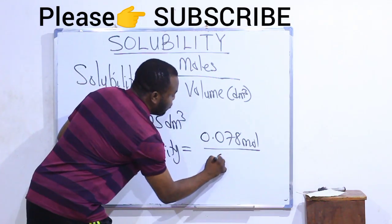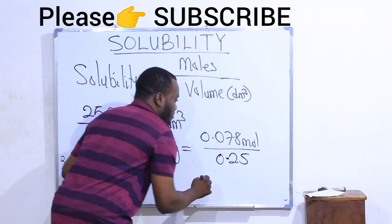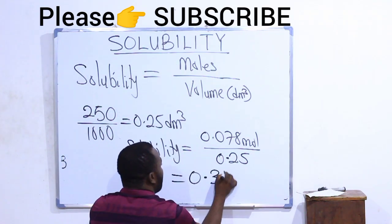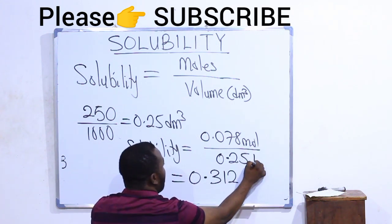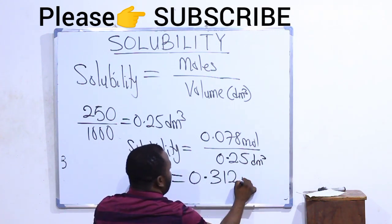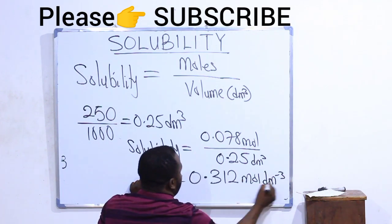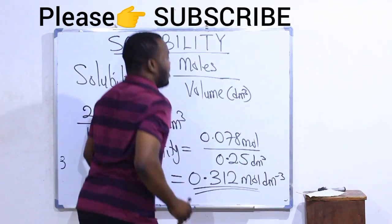So, our final answer becomes 0.312 moles per dm³. This is the answer.